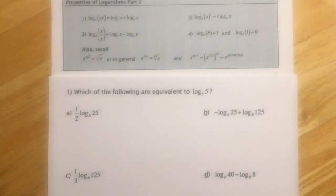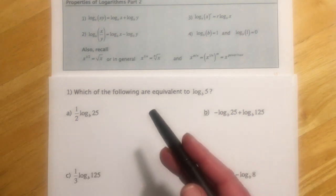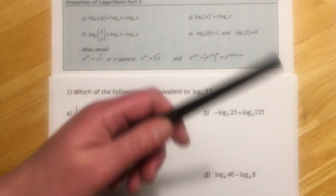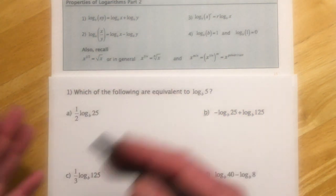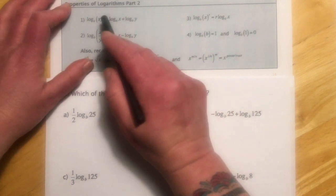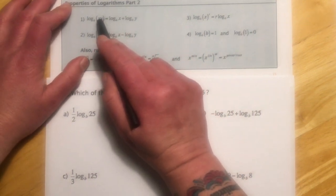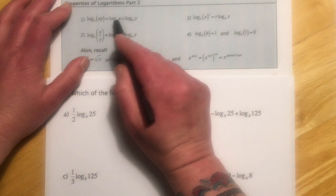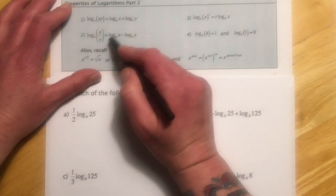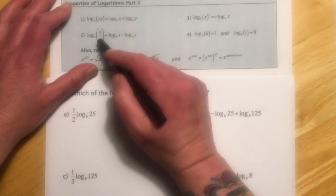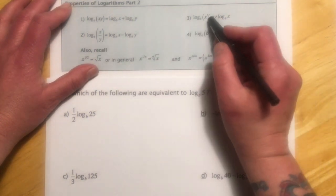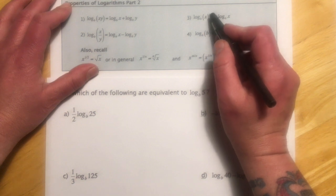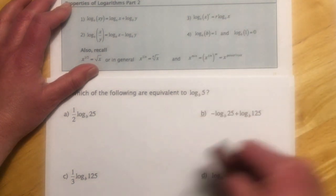This is section 4.5 on logarithmic properties. There are three main properties. First, when two things are multiplying in the argument of a log, we can write it as the sum of two separate logs, and vice versa. Second, when two things are dividing in the argument, we can write that as the difference of two logs. Third, when there is an exponent on the argument, we can bring it down front as a coefficient.